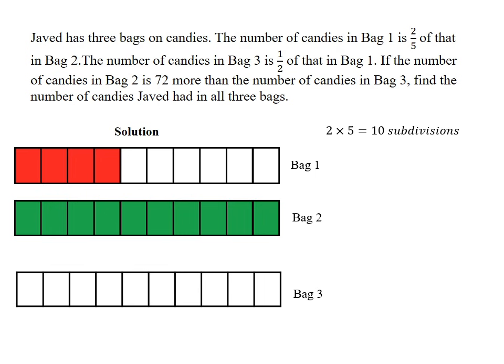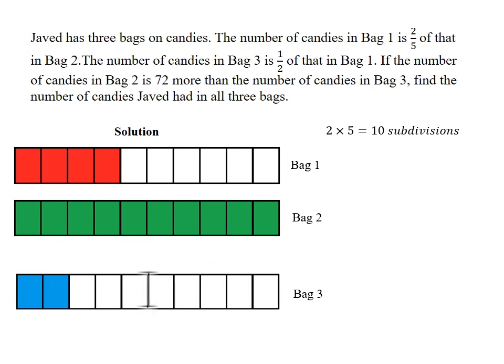They went on to say that bag three is a half of bag one. A half of four happens to be two. So that this represented here is bag three. So you can see two of the boxes in bag three are shaded.